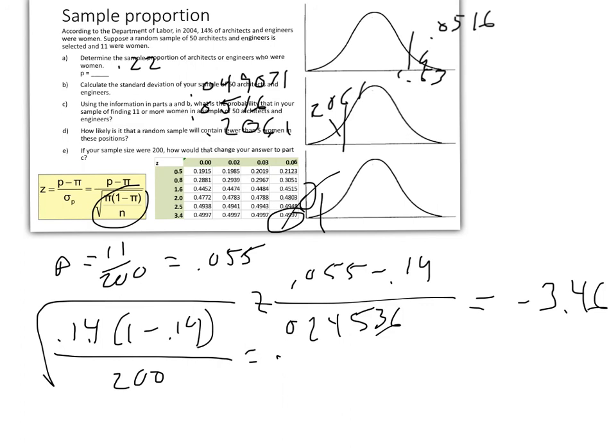If you came up with that result, you would question the overall proportion that you were given to start with and say, is that really possible to get a result that included so few women—11 in this case—out of a sample of 200, if our population proportion is really 14%? But anyway, the answer as far as how would that change it: that would be a very unlikely outcome, almost impossible.